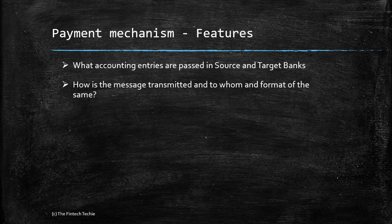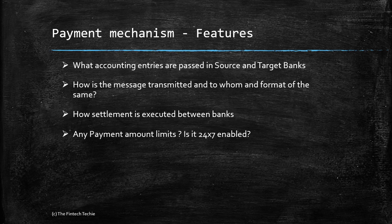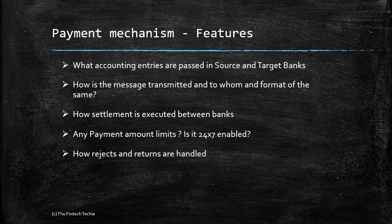Secondly, and probably the most important: how is the message transmitted, to whom, and what is the format of the message? It is important that the message is transmitted in a very secure manner. Thirdly, how is settlement executed between the banks — is it Method A (correspondent banking), Method B (net settlement), or Method C (real-time gross settlement)? What are the payment limits — per day or by transaction amount? Is it 24x7 enabled? How are rejects and returns handled — for example, if Charlie's account was inactive or closed in Bank Two, how will Bank Two handle that reject and return it to Bank One?